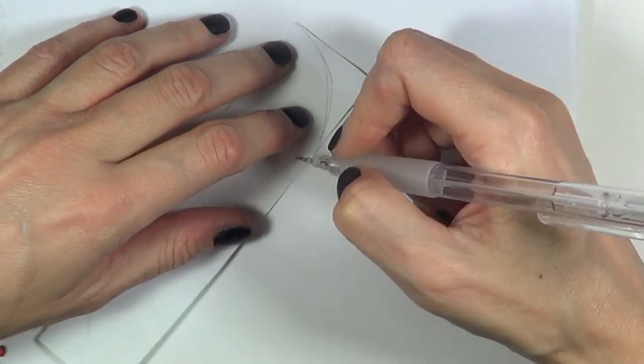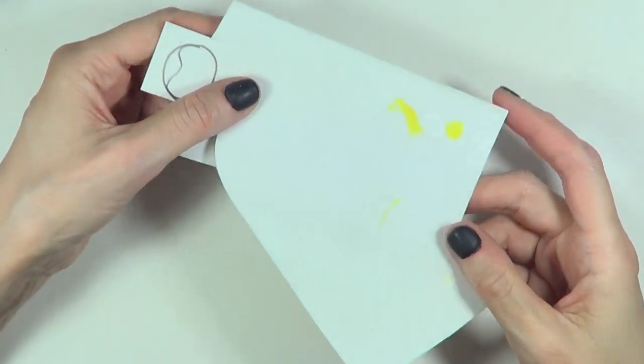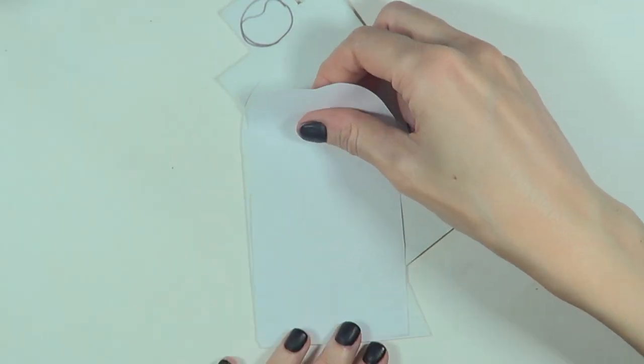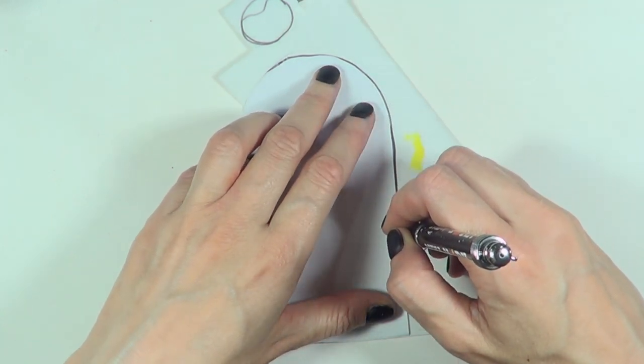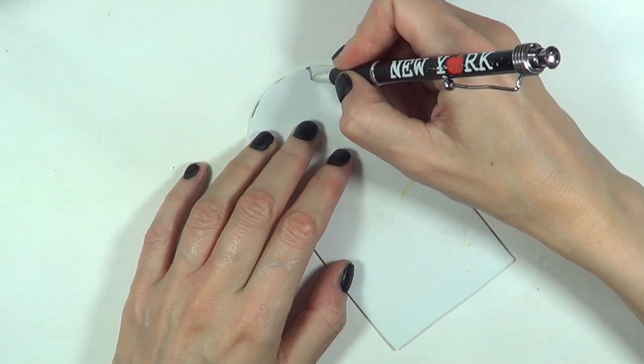I'm using this leftover piece of foamy paper that I found around the house. I didn't have gray. I'm just going to trace the shape of my cut tombstone and then just cut it.